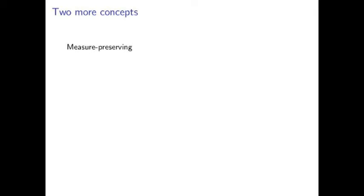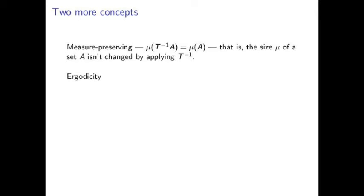The first concept is measure-preserving. A dynamical system is measure-preserving if μ(T^(-1)A) = μ(A). And you can think of this as saying, applying T to a set does not change the measure of that set. Okay, really, we're applying T inverse, but that's there for a technical reason again.